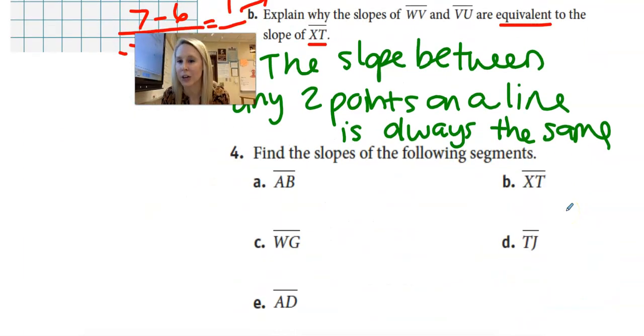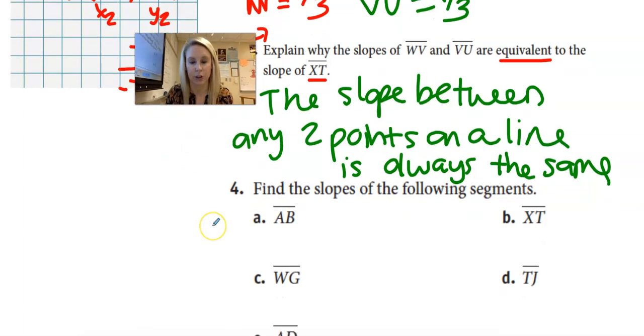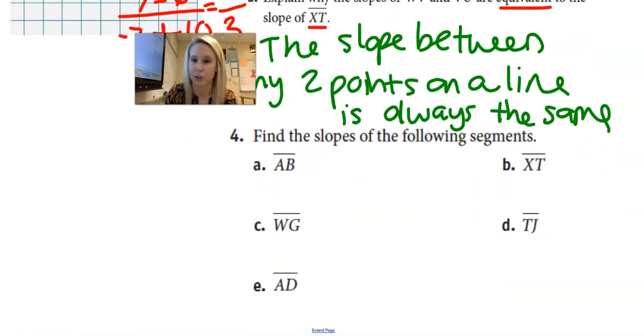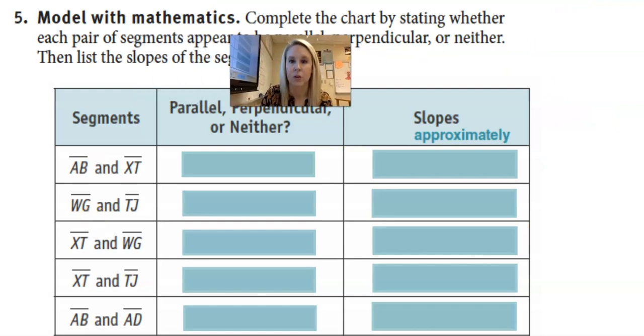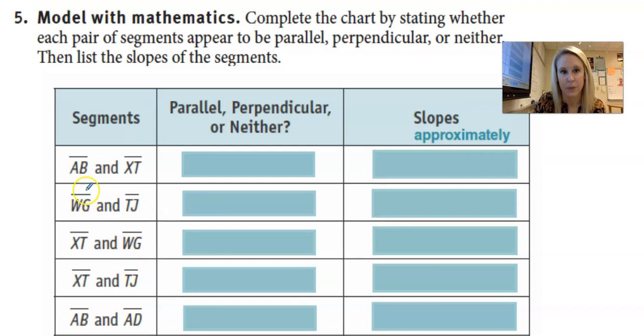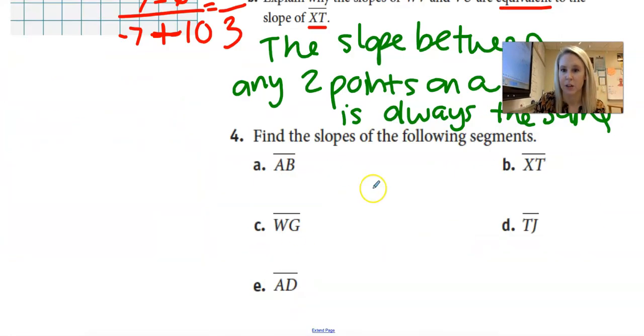Alright. So you guys are going to try A, B, C, D, and E. I want you to find the slope of those lines. Again, you can use your formula or you can use rise over run. Once you have the slopes of your lines, I want you to try number five, which asks you to compare and contrast the slopes of the lines you found. So AB and XT, are they parallel, perpendicular, or are they neither? And then write down the slopes of what you got for the first answer. So find these slopes and then complete the table on the next page. Press pause.